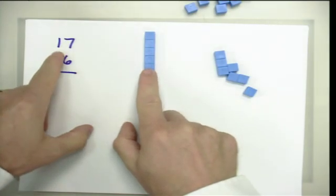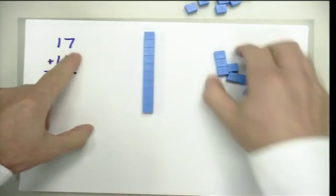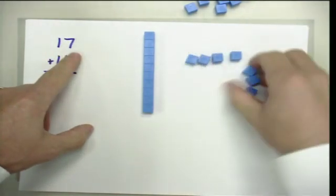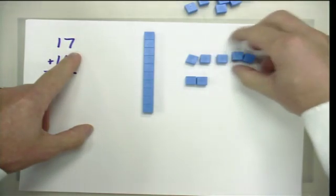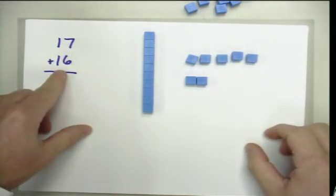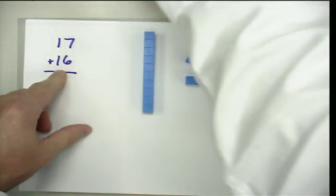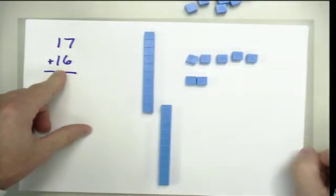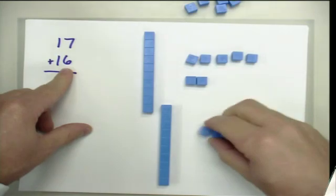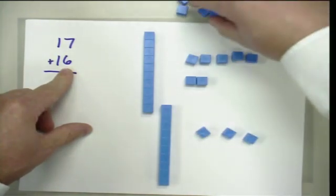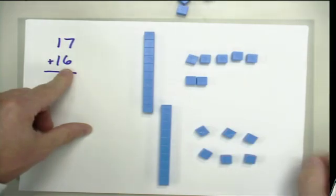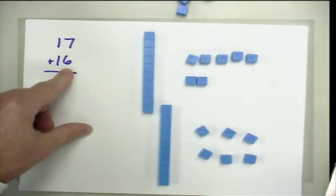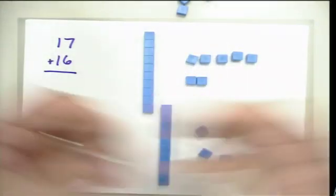The first thing we would do is model our 17 — I have to identify how many tens in 17, and that's 1 ten and 7 ones. Now I need to model 16, so 16 has 1 ten and 6 ones. So now we have the numbers 17 and 16 modeled concretely.